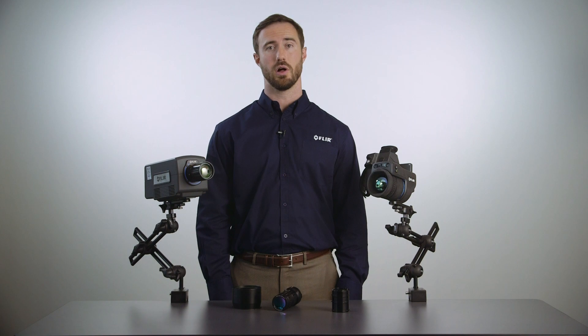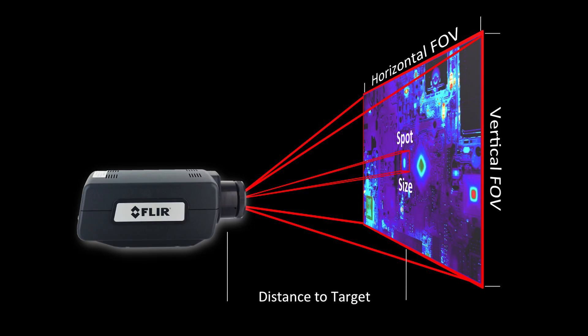Before we compare the field of view imagery from the cooled and uncooled cameras, let's review some field of view terminology. The horizontal field of view is what the camera sees at a given distance in the horizontal perspective, and the vertical field of view is what the camera sees in the vertical perspective. The spot size is what one detector pixel will see at a given distance. The fields of view and spot size will vary for a camera system and are dependent upon the lens in use and the distance to the target.